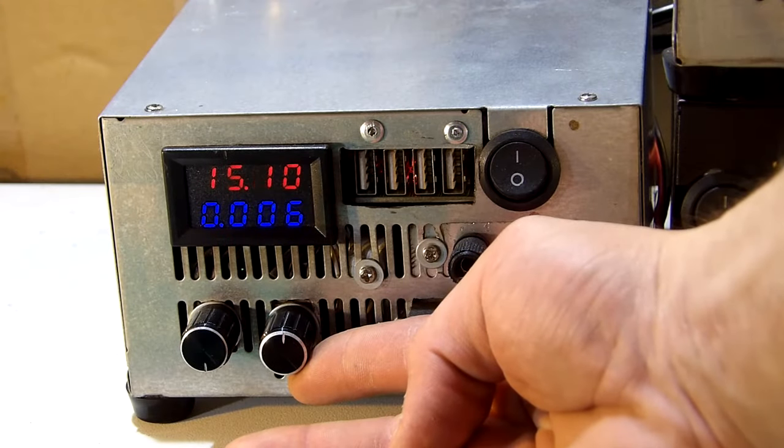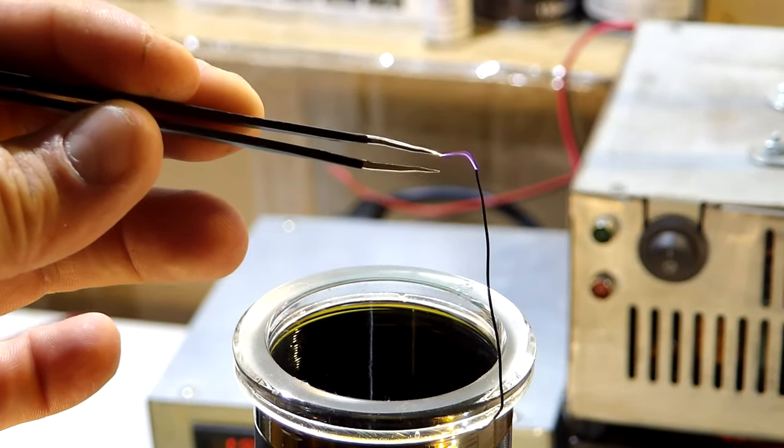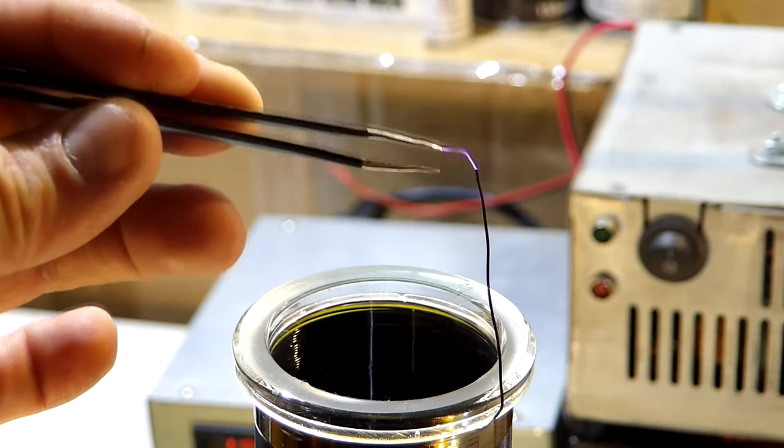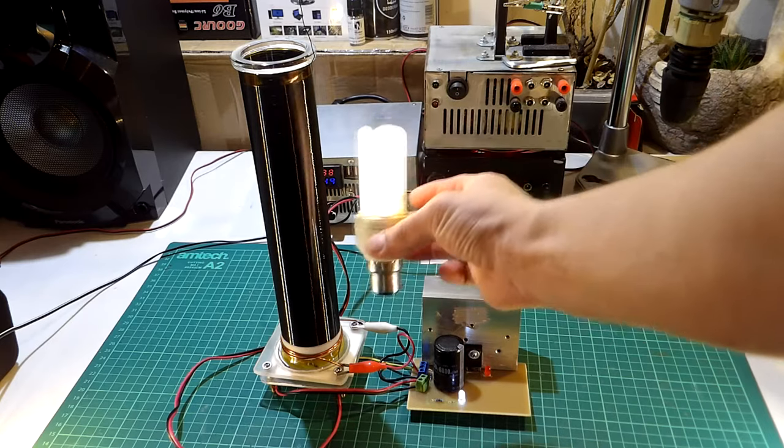Now after setting the bench power supply to around 15V let's connect the power to the tesla and you can see a small purple arc which is created by the tesla coil by ionizing the air around it.